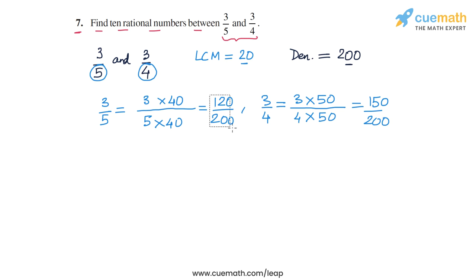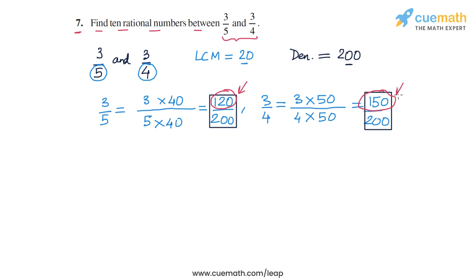The numerators of these two rational numbers are 120 and 150, and there are more than 10 integers between them. So we can easily find 10 rational numbers — all we need to do is pick 10 integers between 120 and 150 to use as our numerators.